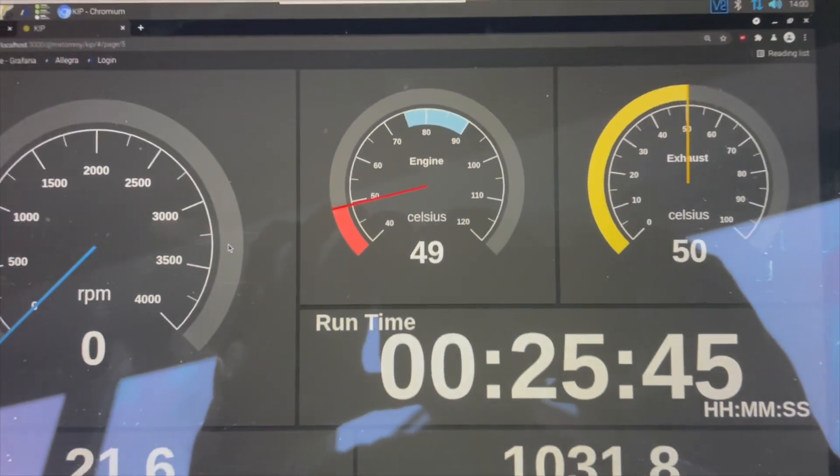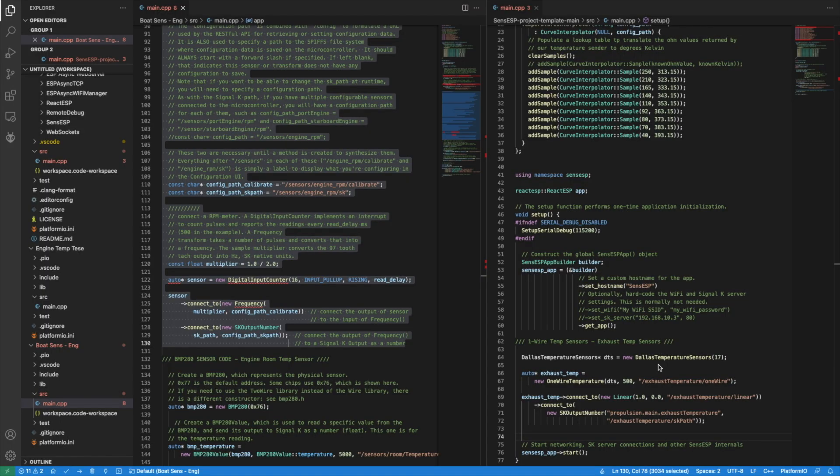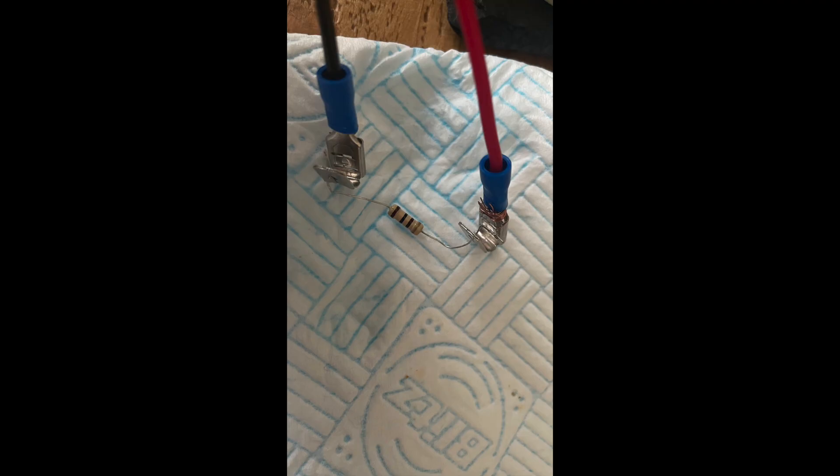It turned out that with that configuration mine was actually reading about 125 ohms, so I adjusted the values in the script to allow for that difference.